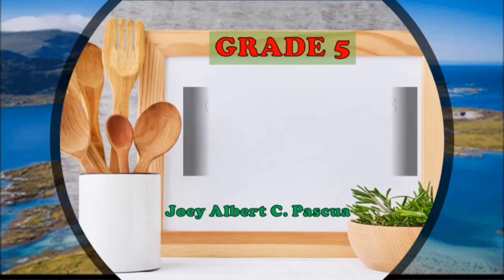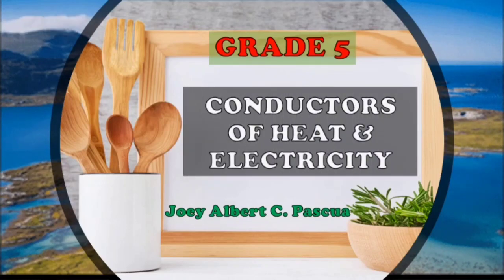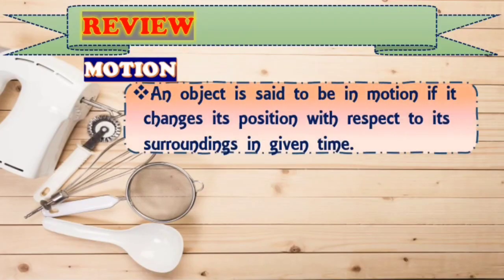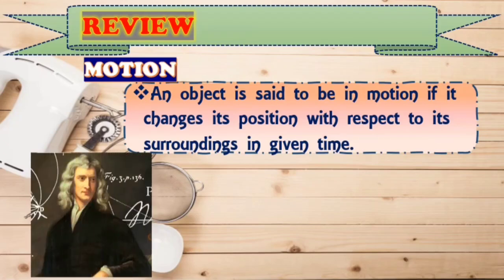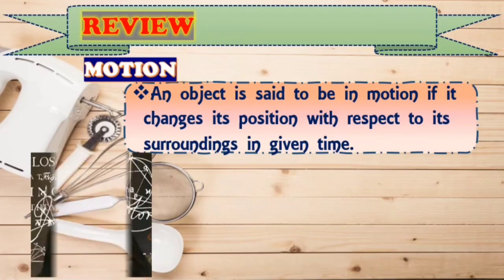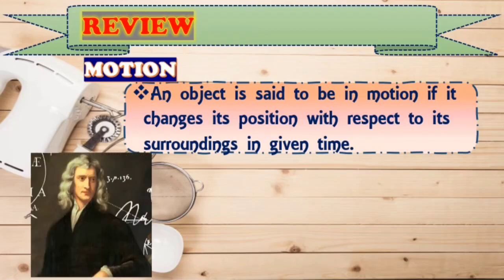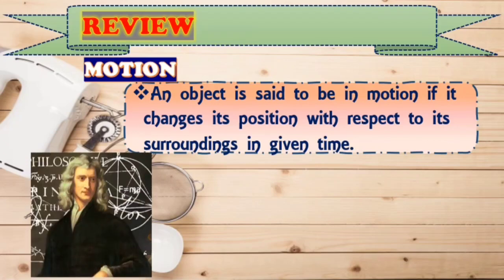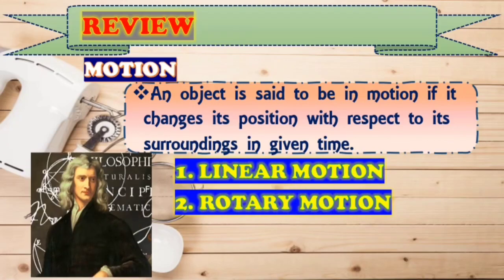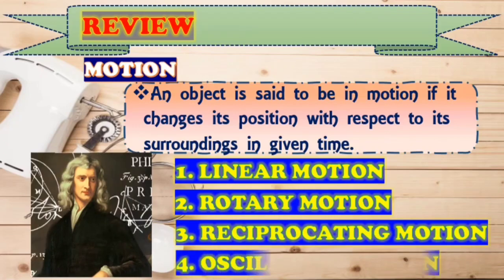Today, class, we are going to discuss about conductors of heat and electricity. Last meeting, we discussed about motion. It is said that an object is said to be in motion if it changes its position with respect to its surroundings in a given time. According to Isaac Newton, who discovered the relation between motion and force, forces in nature produce many different types of motion. It includes linear motion, rotary motion, reciprocating motion, and oscillating motion.